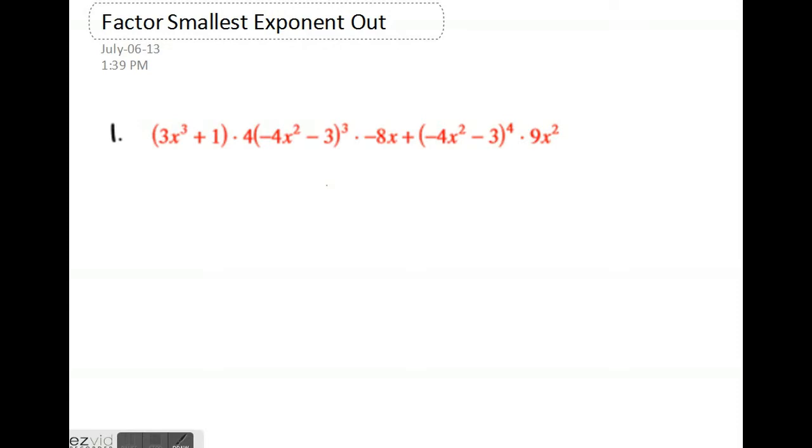Welcome to a video on how to factor the smallest exponent out, which is especially useful in calculus after taking derivatives. Looking at this expression, you should first simplify some things, so you'd have negative 32x.